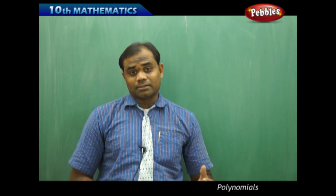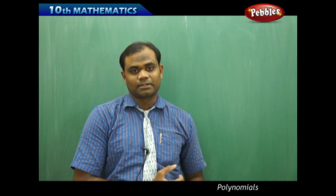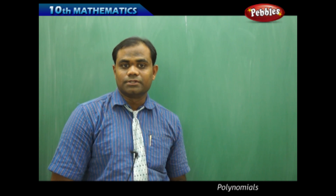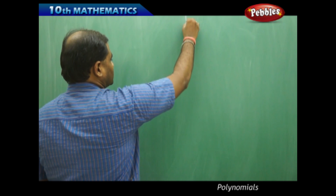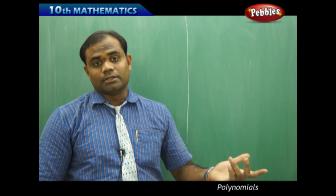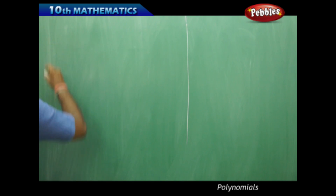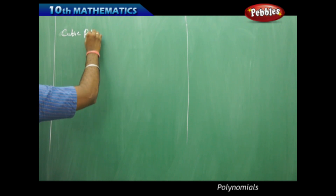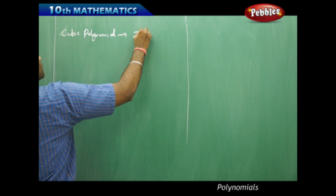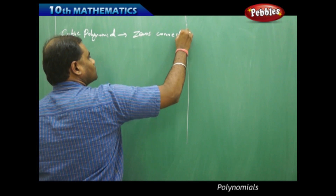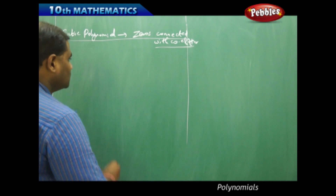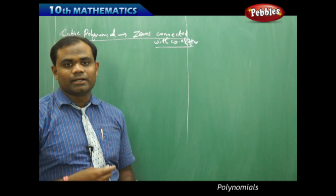Now let's see how we can connect the zeros of a cubic polynomial with its coefficients, similarly as we have seen for the quadratic polynomial. We are going to see the cubic polynomial connected with zeros and its coefficients. Let me take an example problem and investigate how the sum of zeros and the product of zeros are connected with the respective coefficients. Let me take an example cubic polynomial and investigate its roots and see the outcome.